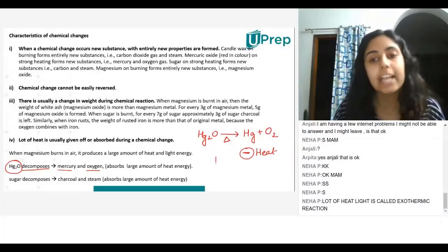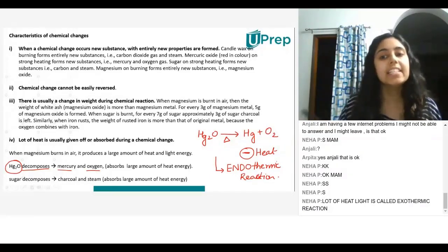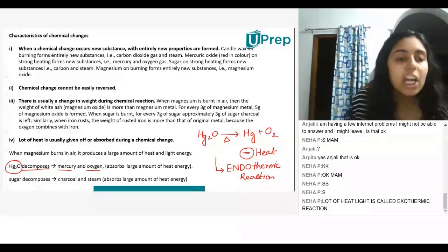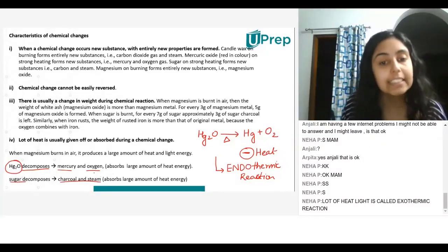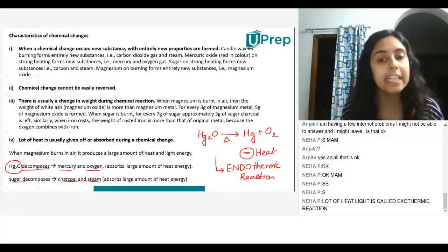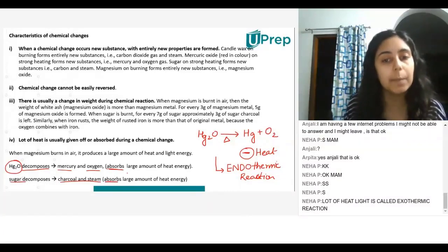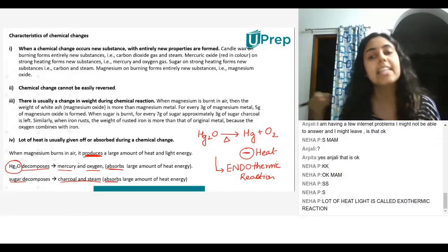Such reactions are called endothermic reactions. Whenever heat is absorbed, it is an endothermic reaction. Similarly, sugar decomposes into charcoal and steam, and when it does that, it absorbs a lot of heat energy — that is also an endothermic reaction. So wherever heat energy is absorbed, it is endothermic; wherever heat energy is produced or released, it is exothermic.